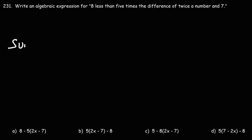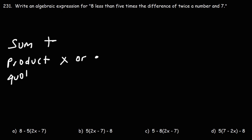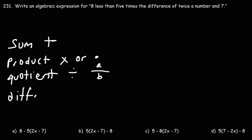So we talked about the sum — that's addition. The next keyword is the product — that's multiplication. And then the next keyword was the quotient, which we're dealing with division, or you can write it as a fraction. Now the key word here is the difference, so we're dealing with subtraction.